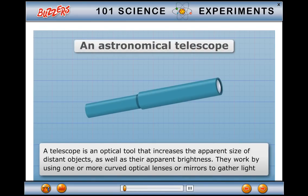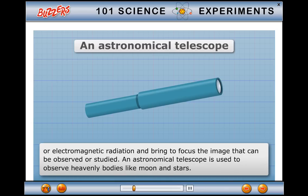An Astronomical Telescope. A telescope is an optical tool that increases the apparent size of distant objects as well as their apparent brightness. They work by using one or more curved optical lenses or mirrors to gather light or electromagnetic radiation and bring to focus the image that can be observed or studied. An astronomical telescope is used to observe heavenly bodies like moon and stars.